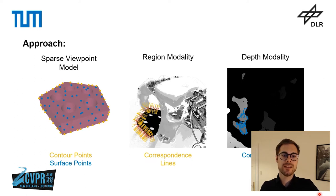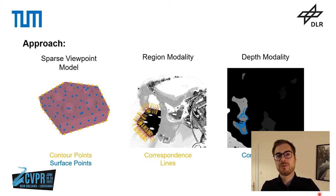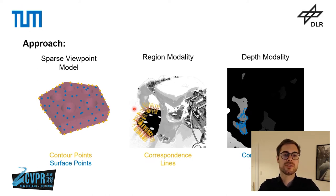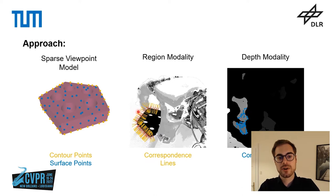For tracking we use two sources of information: region and depth. For the region modality we use color histograms to differentiate between the object and the background. Based on the probability that a pixel belongs to the object or background, we calculate the probability of the contour location along so-called correspondence lines, which you can see here in yellow.